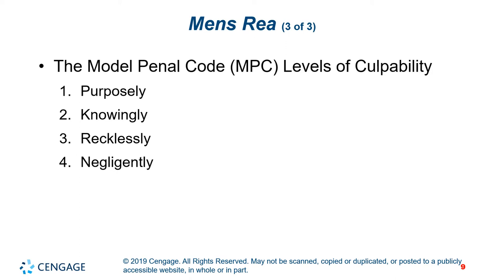Purposely is the most blameworthy mental state, requiring the actor's conscious object to commit a crime or cause criminal results. Knowingly is the mental state of awareness in conduct crimes, and in result crimes, awareness that it's practically certain that the conduct will cause a bad result. Recklessly is the conscious creation of a substantial and unjustifiable risk of criminal harm. The MPC proposes that fact-finders determine recklessness according to a two-pronged test: first, the subjective prong — was the defendant aware of how substantial and unjustifiable the risks they disregarded were? — and second, the objective prong — does the defendant's disregard of risk amount to so gross a deviation from the standard that a law-abiding person would observe in that situation?